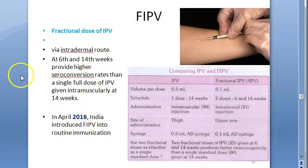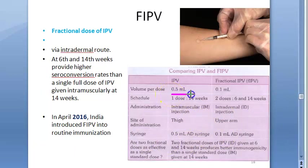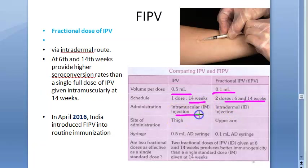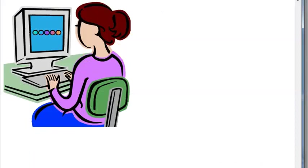Comparing IPV and fractional IPV: IPV is 0.5 ml given as one dose at 14 weeks intramuscularly in the thigh. Fractional IPV is 0.1 ml given as two doses at 6 and 14 weeks intradermally in the upper arm.